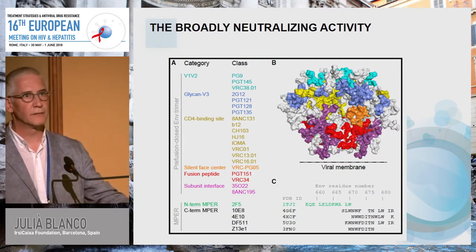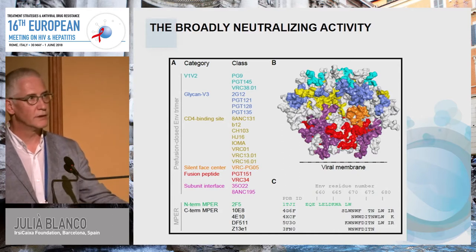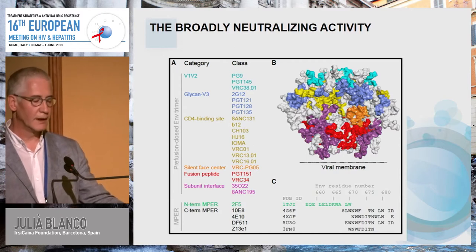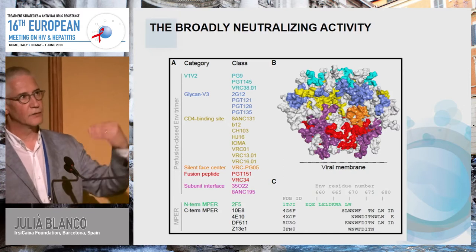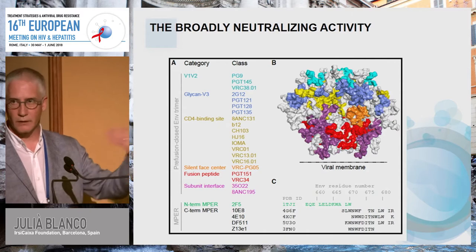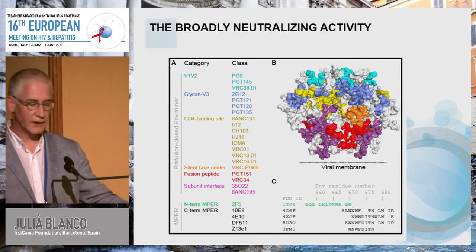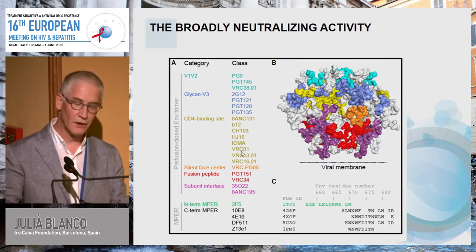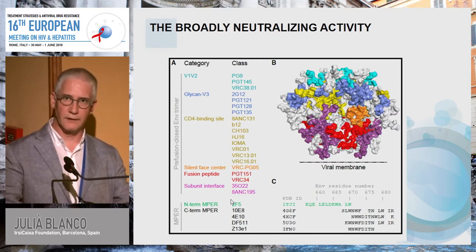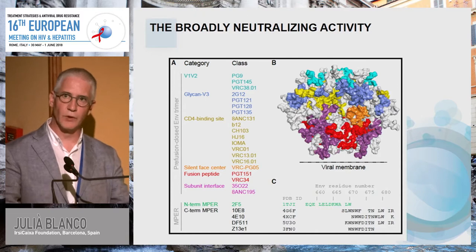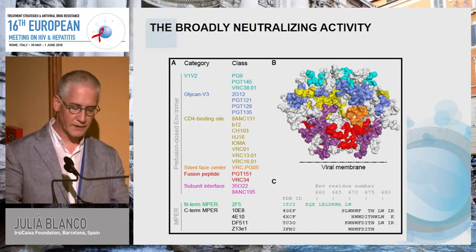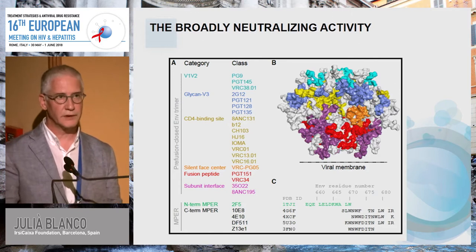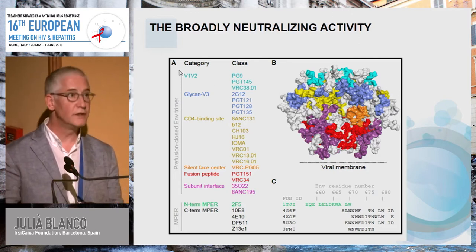The first broadly neutralizing antibodies were identified about 20 years ago. There were four different antibodies with relatively poor potency, but technology to identify and characterize new monoclonal antibodies has grown, allowing identification of a still short but growing list of antibodies able to block envelope function and recognize very different HIV strains across different clades. These antibodies recognize mostly conserved regions of the envelope, and we can find different specificities.